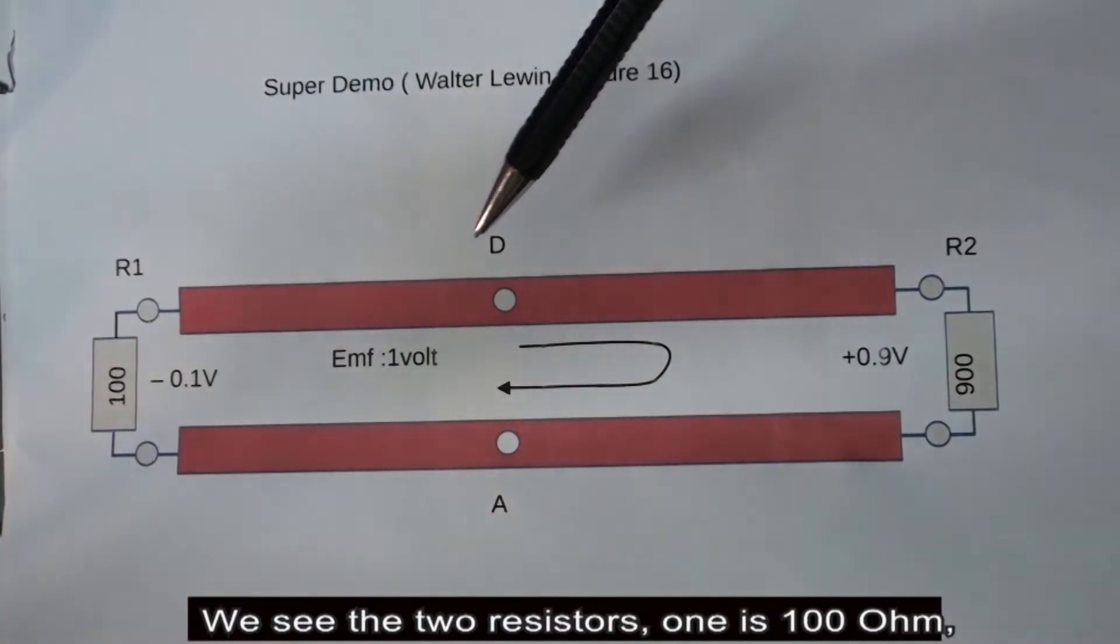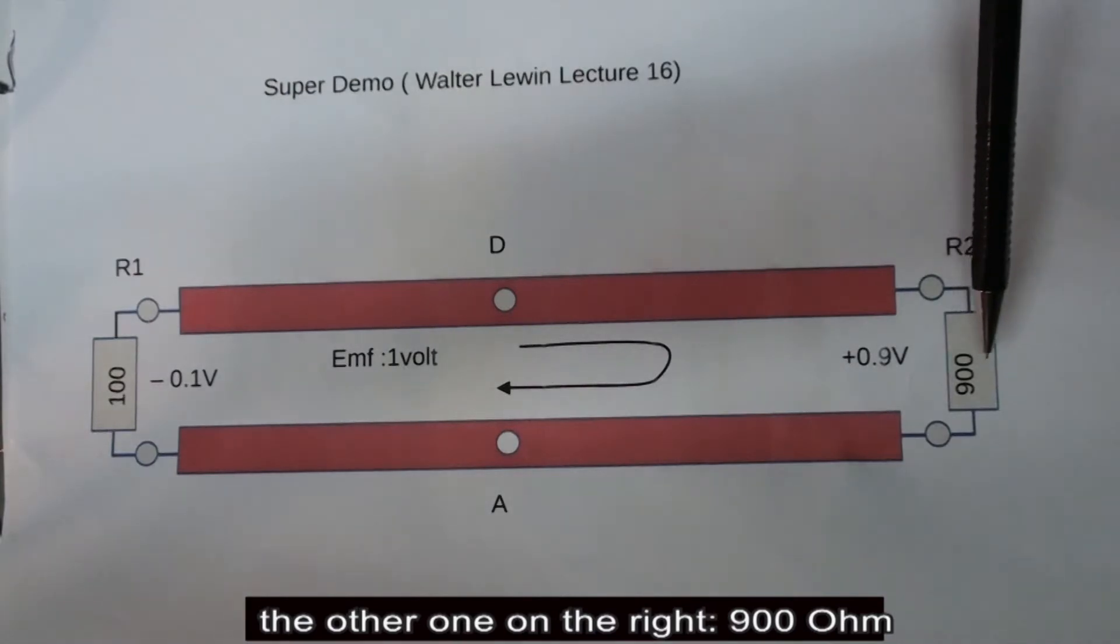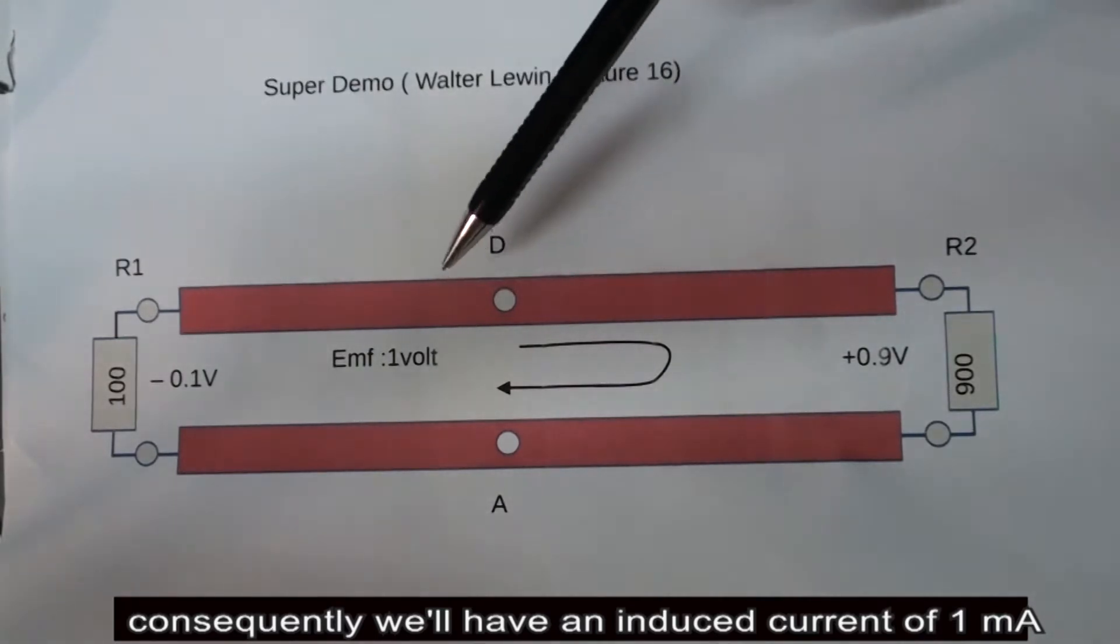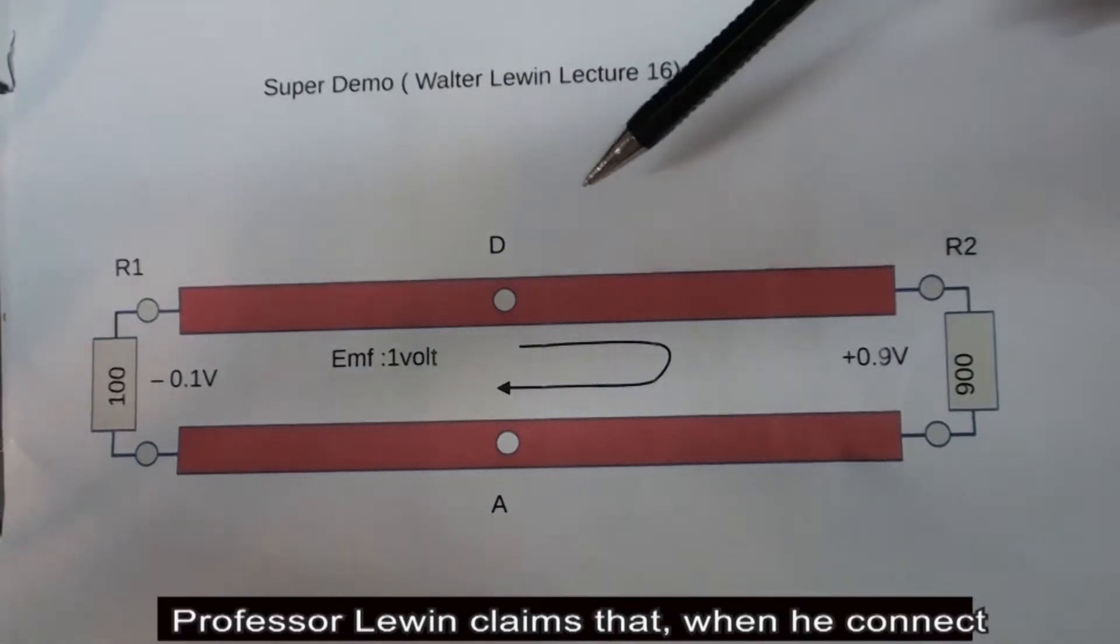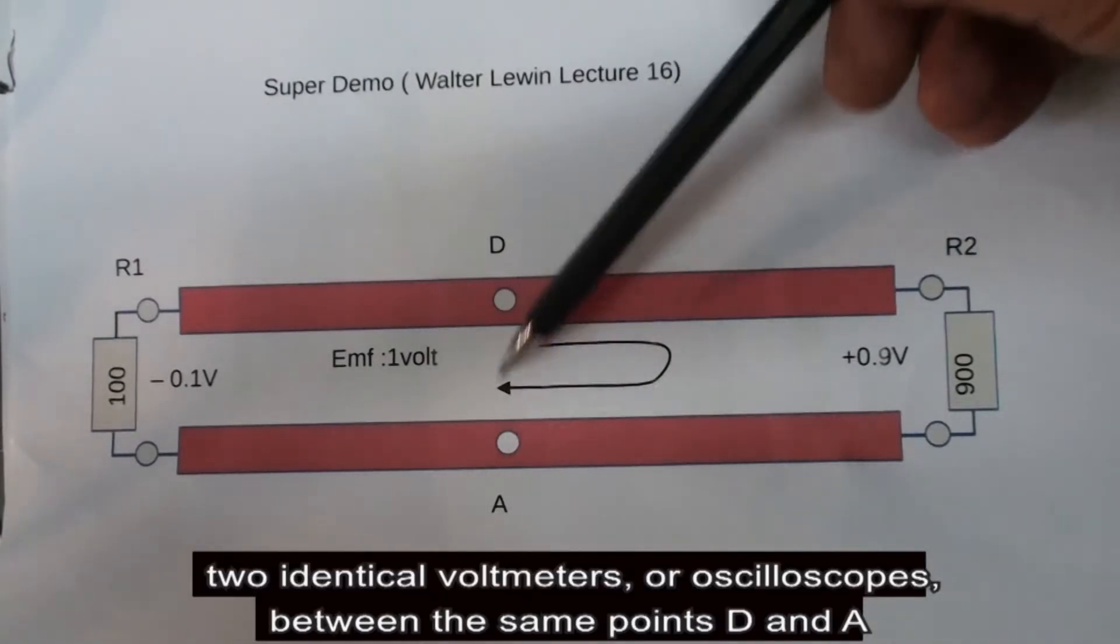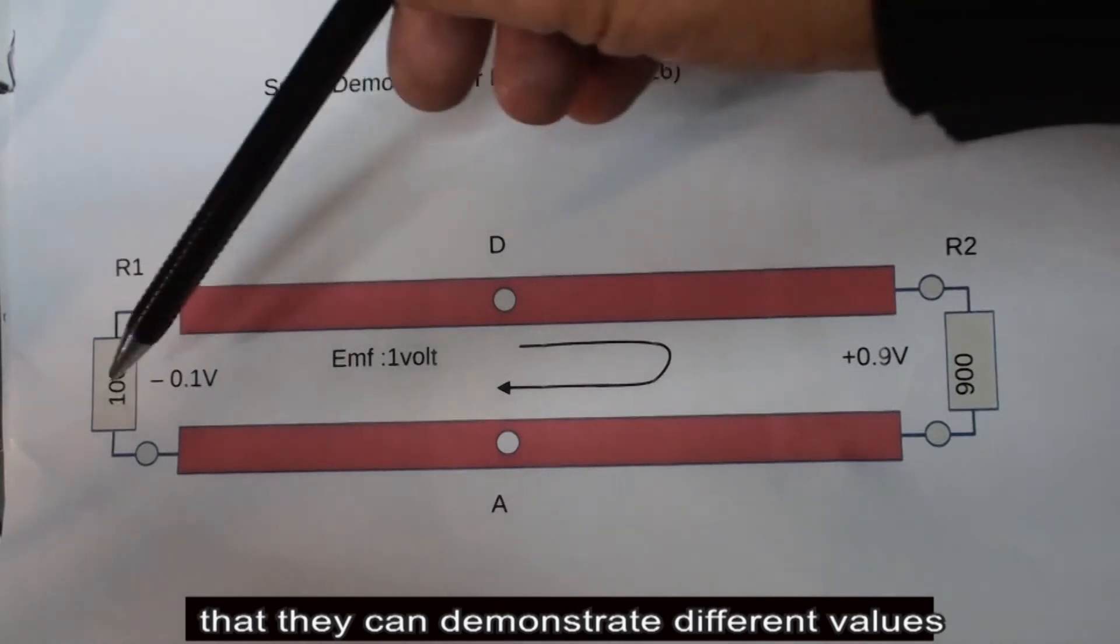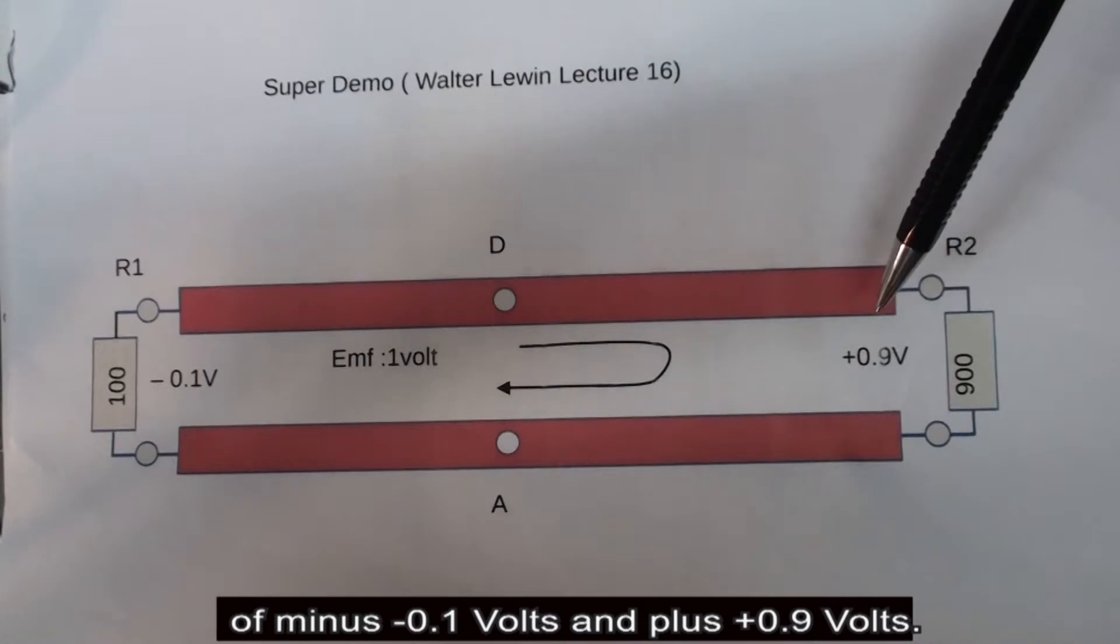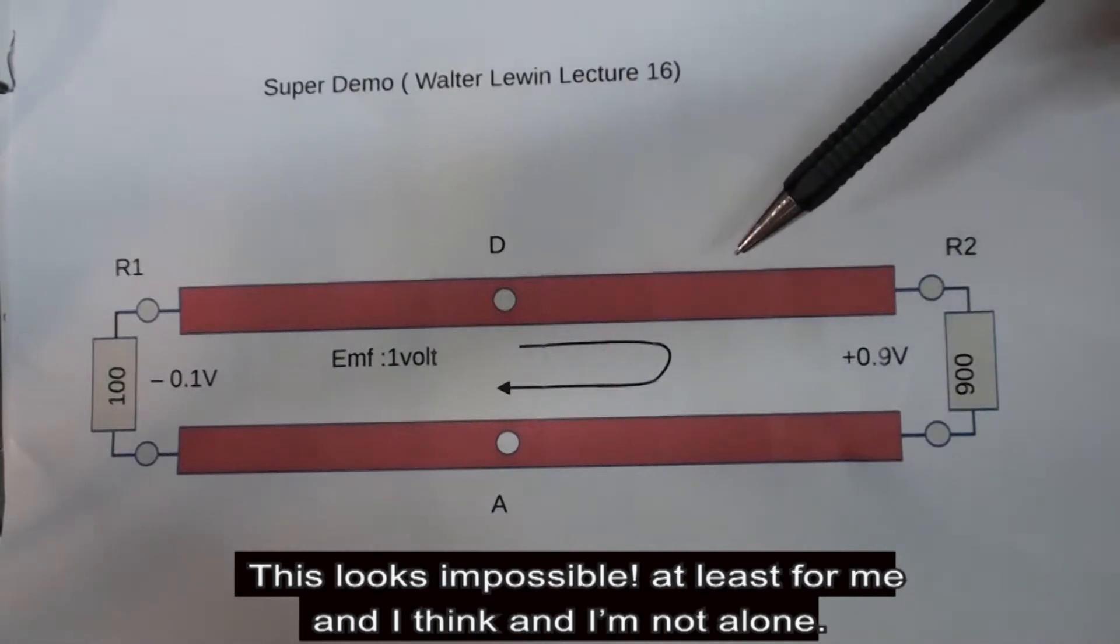You see the two resistors, one is 100 ohms, the other on the right 900 ohms. Consequently we'll have an induction current of 1 milliampere. This is Ohm's law. Now Professor Lewin claims that when you connect two identical voltmeters or oscilloscopes between the same points D and E, they can demonstrate different values of minus 0.1 volt and plus 0.9 volts. This looks impossible, at least for me.